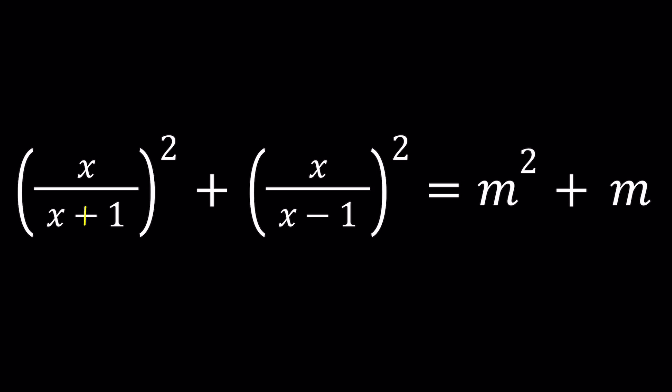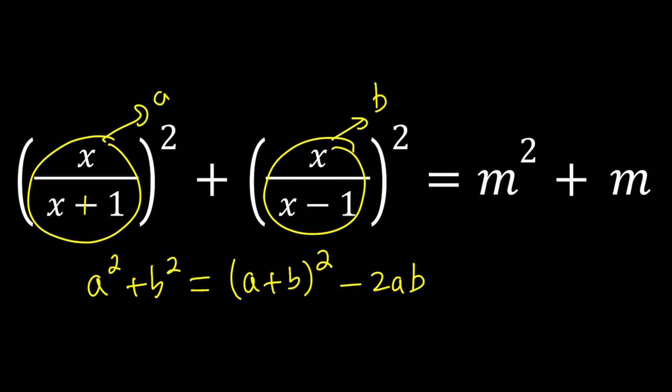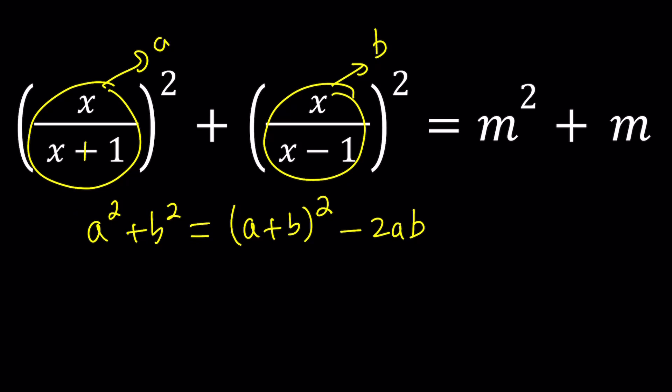To solve this problem we're going to use an identity which looks like this: a squared plus b squared can be written as a plus b quantity squared, and then we subtract the term in the middle. You should be familiar with this if you're studying algebra. Now by using this identity, I want to call this a and this b so that I can apply my identity.